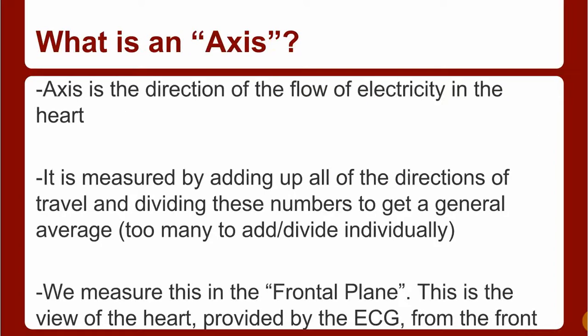Axis is the direction of flow of electricity in the heart—that's the basics of it. The way we get axis is we measure up all of the directions, we add up all the directions of travel and divide these numbers to get a general or average.